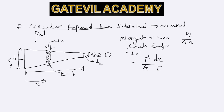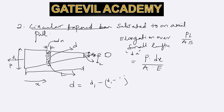We have diameter D1 at one end and D2 at the other. The diameter at distance x from the D1 end is d. Since the diameter is decreasing from D1 to D2 over length L, the reduction per unit length is (D1 - D2) divided by L. For length x, the reduction is multiplied by x, giving d = D1 minus (D1 - D2)/L times x.